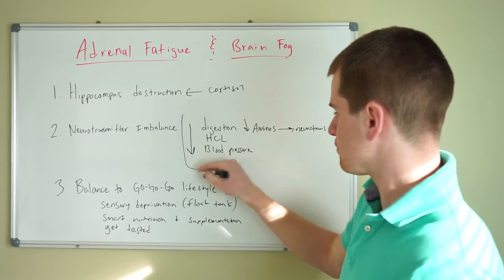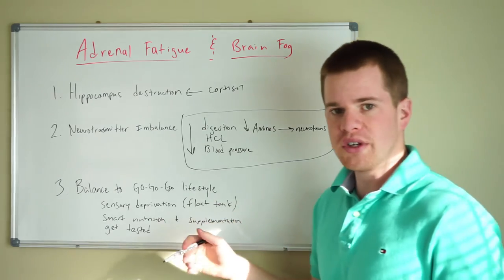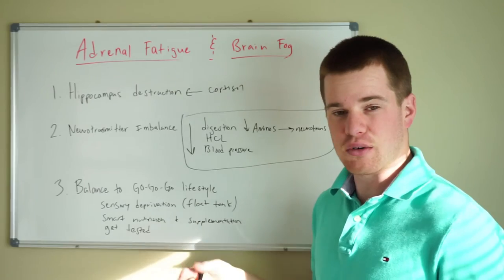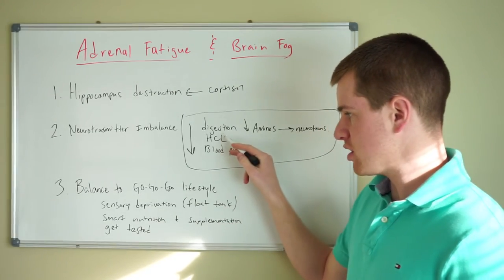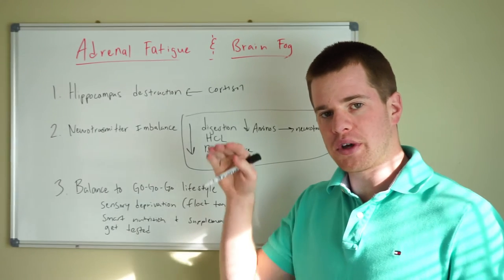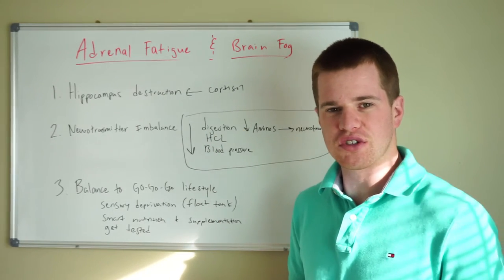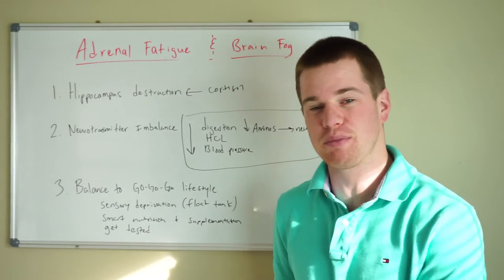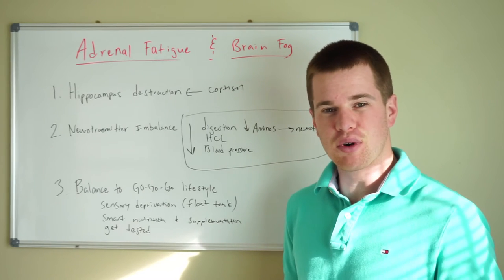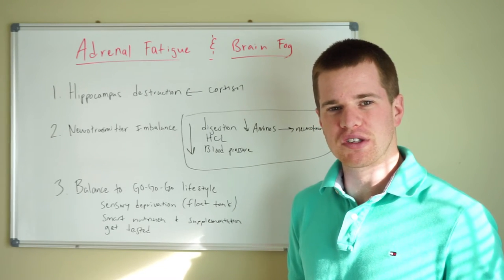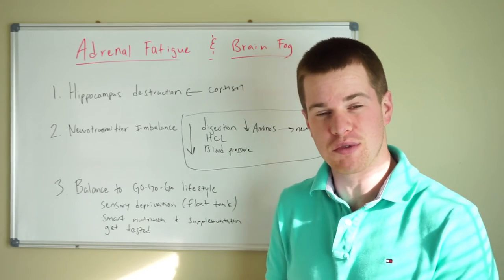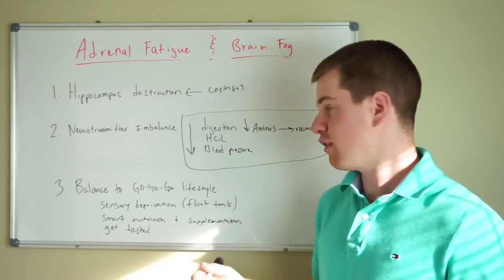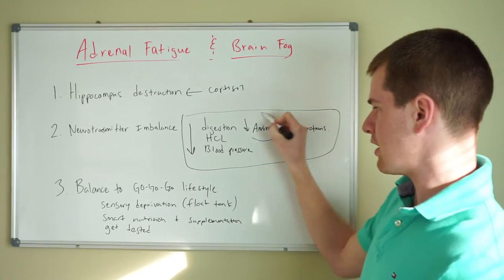Now, here's the other problem. When you're stuck in this sympathetic fight or flight mode, this adrenal fatigue cascade, what happens is digestion and hydrochloric acid production are both going to be suppressed because the parietal cells in your stomach realize, hey, we're getting chased by a lion. We're about to get our legs ripped off by a lion. Digestion is probably not a top priority right now. Why don't we focus on sending blood to the extremities so that we can run from this lion before we get eaten? So at that point, HCL production and digestion are going to slow down. Therefore, you're not going to be breaking down the amino acids.